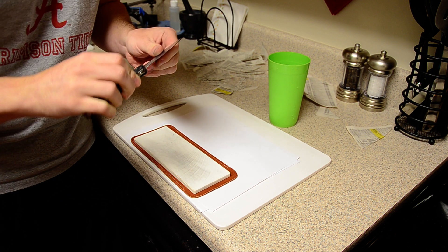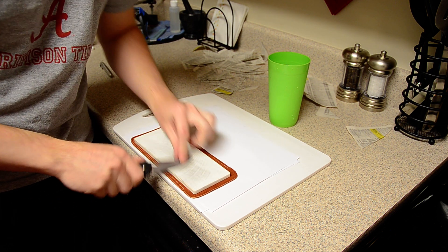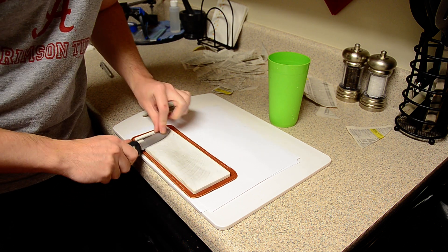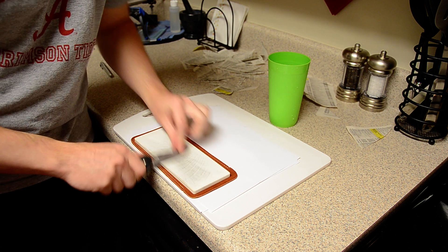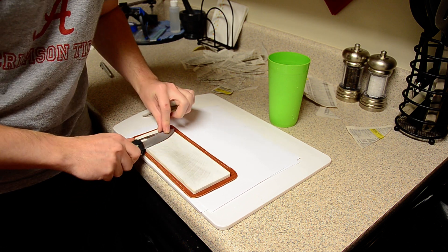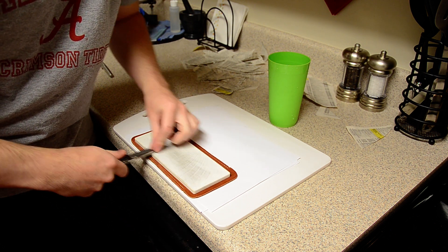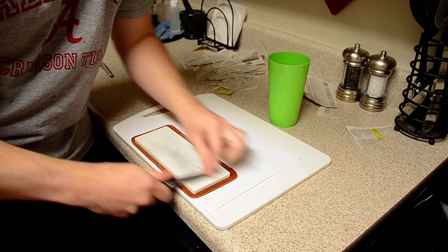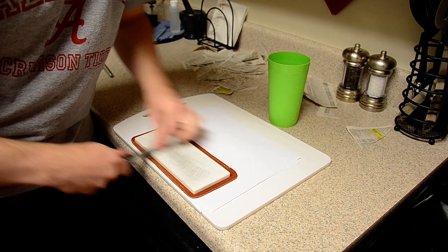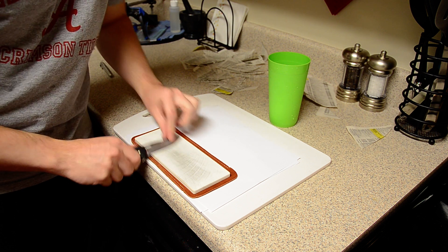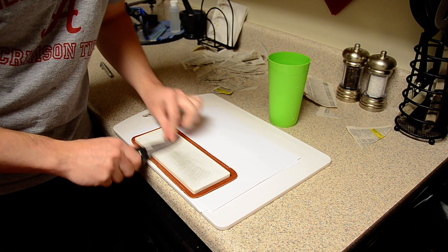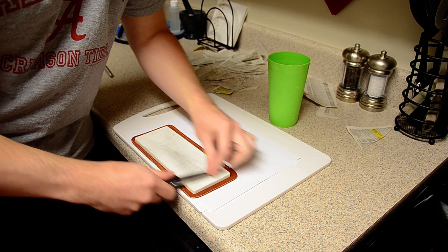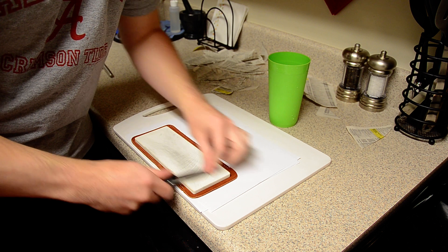I'm not sure of the grit of this stone but just based on the edges that it leaves I would say it's somewhere near 8 to 10,000 grit, because it just really polishes the edge up. I would say I can get a better polish with this stone than I can using the 6,000 grit tape on the Edge Pro. It definitely is capable of a good polish.